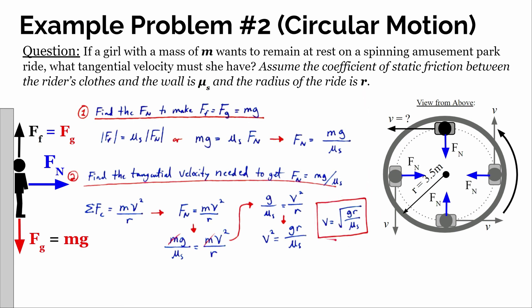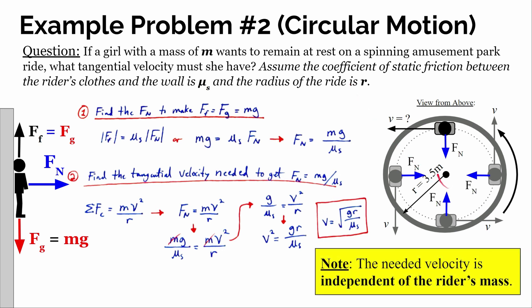Looking at this result, one variable is missing from the expression — there's no m. This tells us that the needed velocity to stay at rest is independent of the rider's mass. No matter what the mass of any rider is, there is one particular velocity that makes everybody stay at rest. This does assume that the coefficient of friction for all riders' clothing against the wall is approximately the same, in which case the required velocity is identical for all riders.